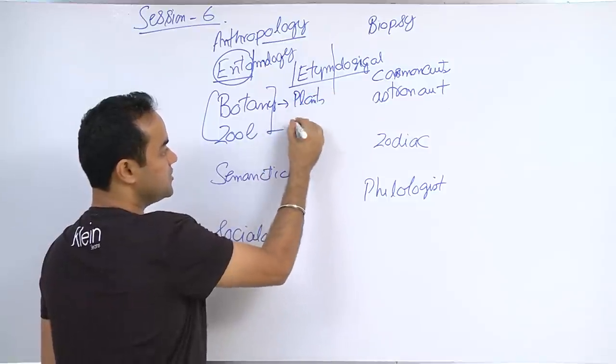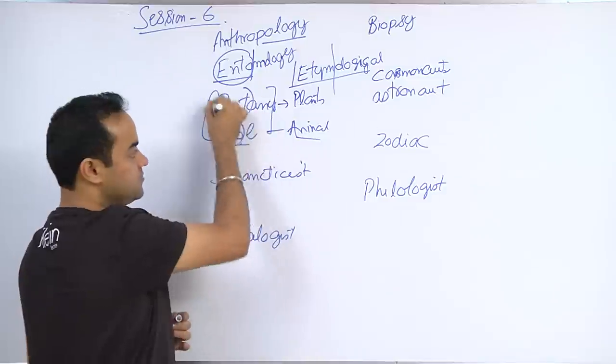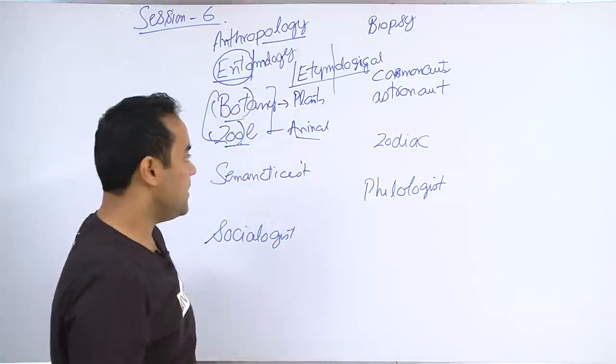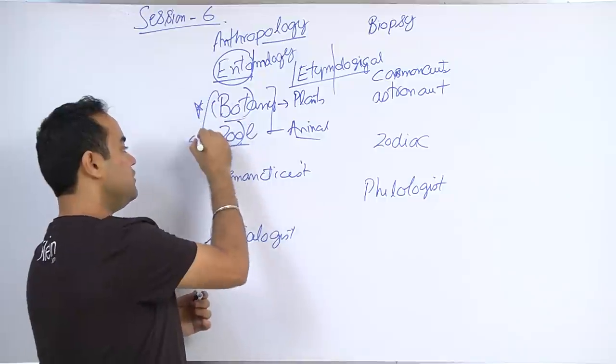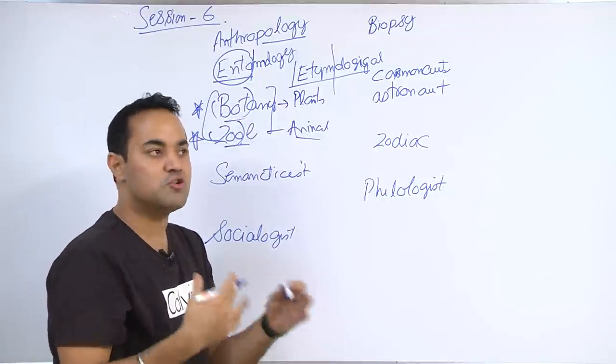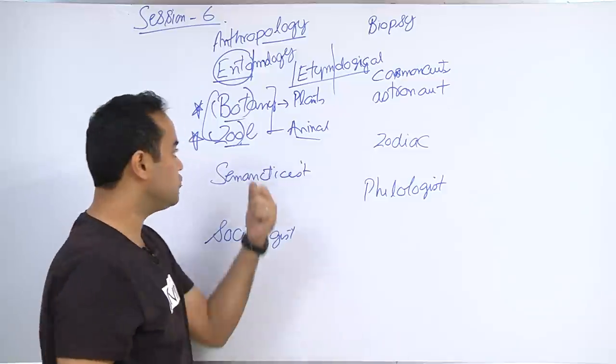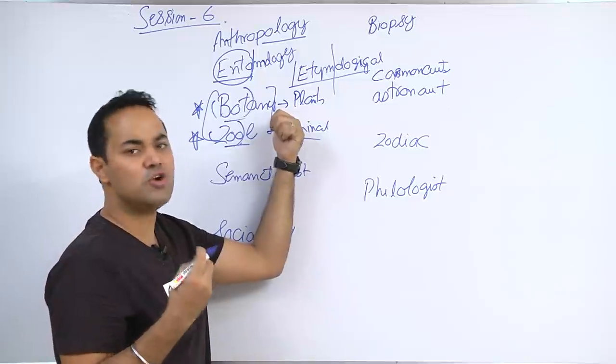Zoology - study of animals. Zoo means animal, bot means plant. That's easy, that's straightforward. Normally in your competitive exams this can go a little more tougher, so I would recommend a couple of books in my reading comprehension sessions.